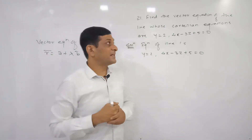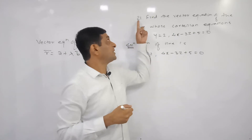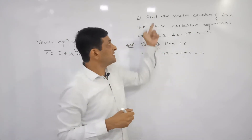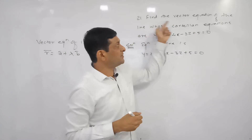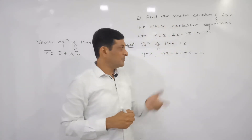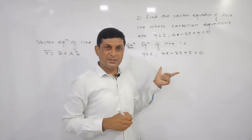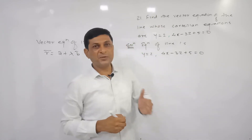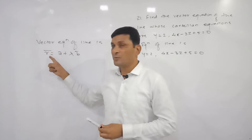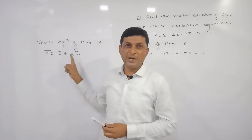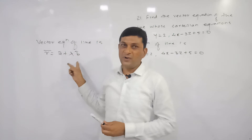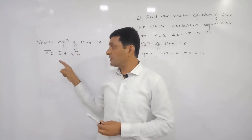We are starting example number 21 from miscellaneous exercise 6a. We have to find the vector equation of a line whose Cartesian equation is given. We simply convert it into a vector equation using the formula: r⃗ = a⃗ + λb⃗.